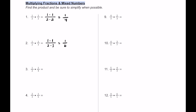For number 3, we have 1 half times 1 fourth, so on top we write 1 times 1, and on bottom 2 times 4. That gives us 1 eighth. For number 4, we have 2 thirds times 1 fifth. Using one fraction bar, we write 2 times 1 in the numerator and 3 times 5 in the denominator. 2 times 1 is 2, and 3 times 5 is 15, so 2 fifteenths is our answer.